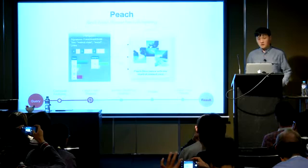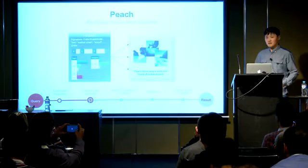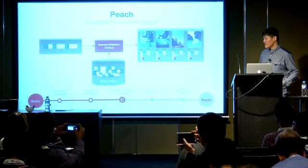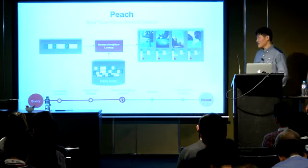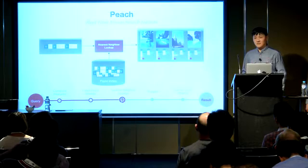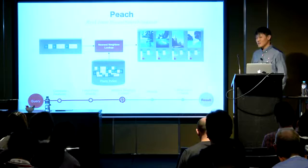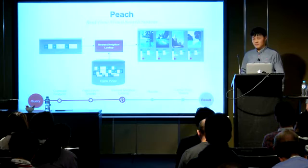After extracting various features for a query image, we send those features into all of our shards. In each shard, given the query's deep learning feature, we look up nearest neighbors using a FLANN-based index. FLANN is a library for nearest neighbor lookup; in particular we use a method called hierarchical clustering trees, which is proven to be a fast way of looking up matching binary features.